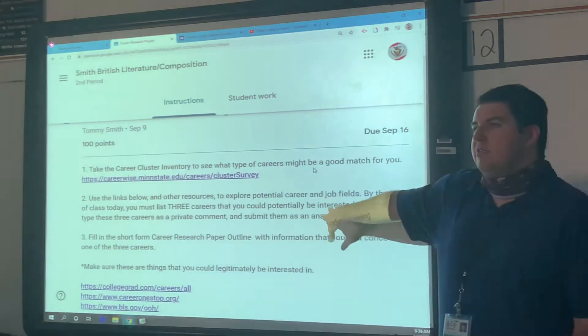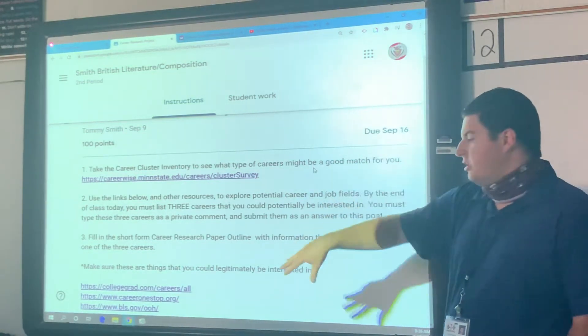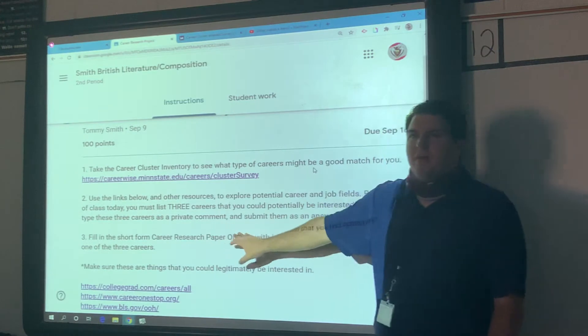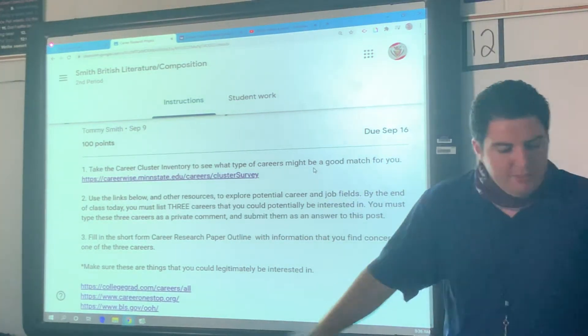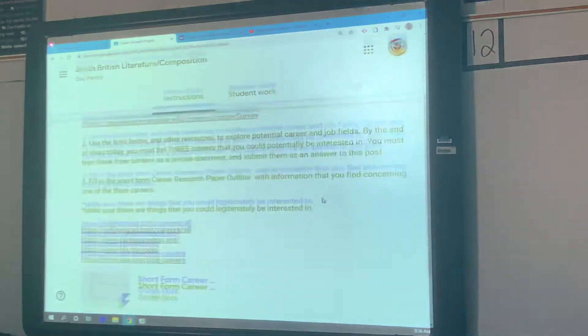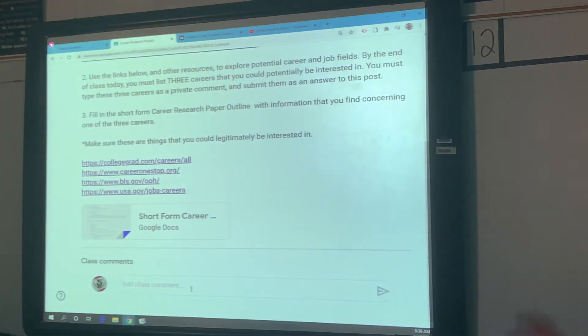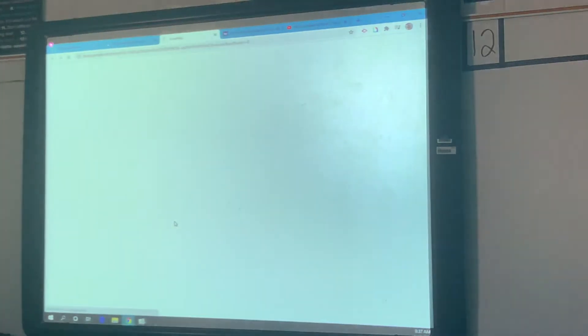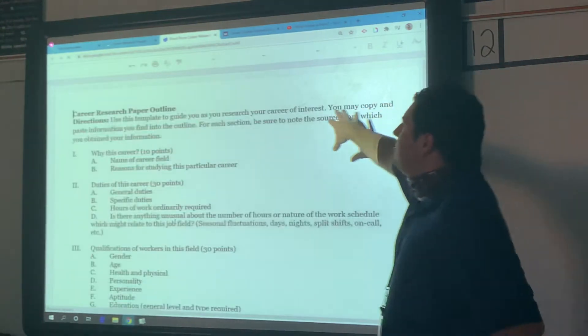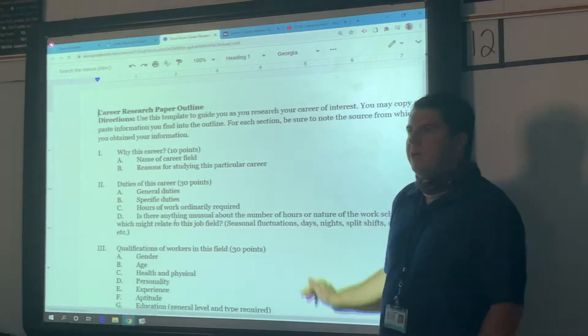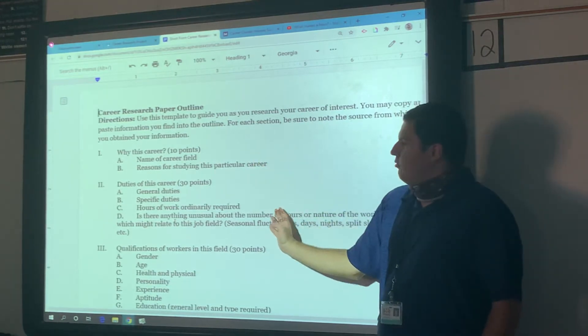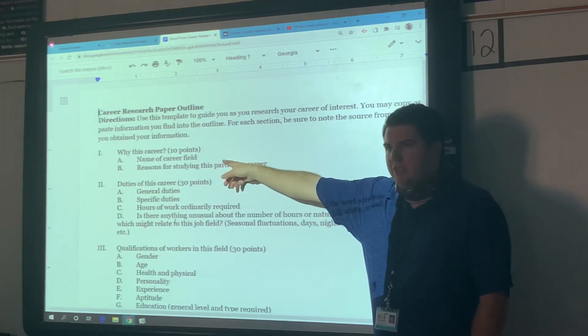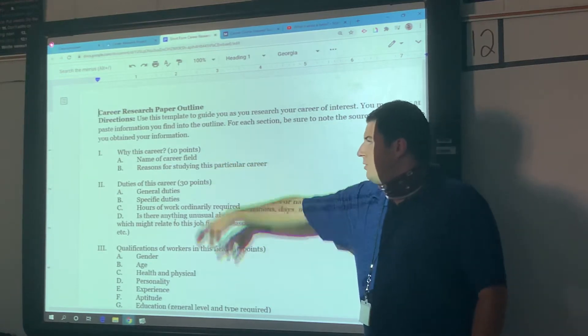Now what I want you to do is when you find those three careers, I want you to type them as a private comment at the bottom of the assignment. As you come here to the bottom of the assignment, there's a little comment section. I want you to type in the three careers that you would be possibly considering. Then you're going to pick one, and you're going to fill out this outline. On this doc that I attach, it's a short form of the career outline. It's very simple and straightforward.